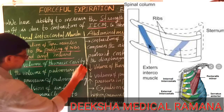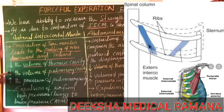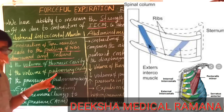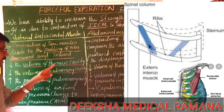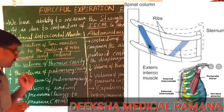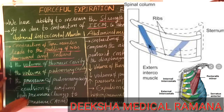The volume of the thoracic cavity decreases, which means the volume of the pulmonary cavity also decreases. The lungs are present in the thoracic cavity. The pulmonary cavity is the cavity present inside the lungs, and the thoracic cavity is the cavity present inside the chest region of the body. Whenever the volume decreases, immediately the pressure increases, according to Boyle's law.